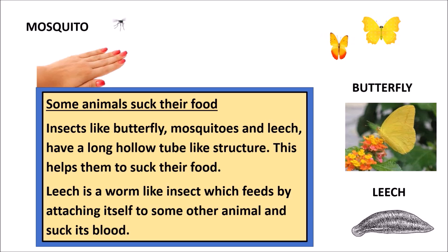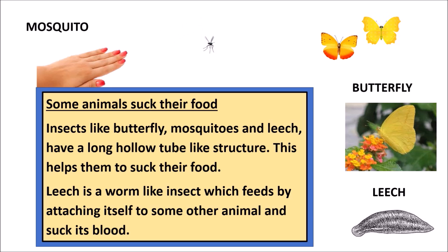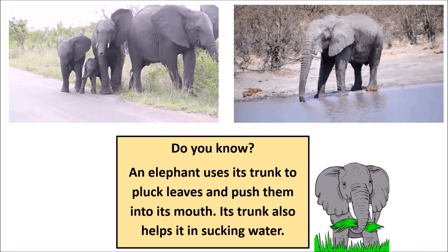Some animals suck their food. Insects like butterfly, mosquitoes, and leech have a long hollow tube-like structure which helps them to suck their food. Leech is a worm-like insect which feeds by attaching itself to another animal and sucking its blood.